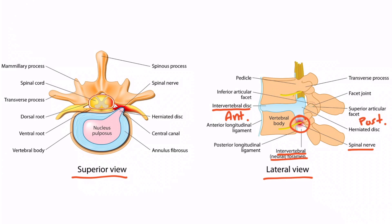Now let's focus on the superior view. From this view, the anterior part and the posterior part of the image are visible. This view allows us to see the intervertebral disc quite well. Notice that the outer aspect is called the annulus fibrosis, and the inner aspect is called the nucleus pulposus. As the annulus fibrosis degenerates, the nucleus pulposus herniates outward — hence the name herniated disc.